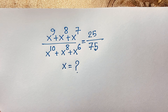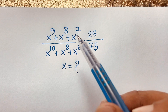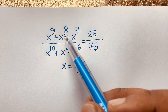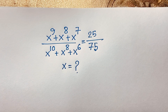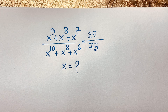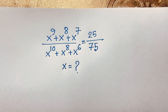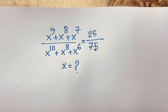Hello everyone. In this video we have solved a nice math problem which is x to the power 9 plus x to the power 8 plus x to the power 7, over x to the power 10 plus x to the power 8 plus x to the power 6, is equal to 25 over 75. We will find out what is the value of x in this math problem.